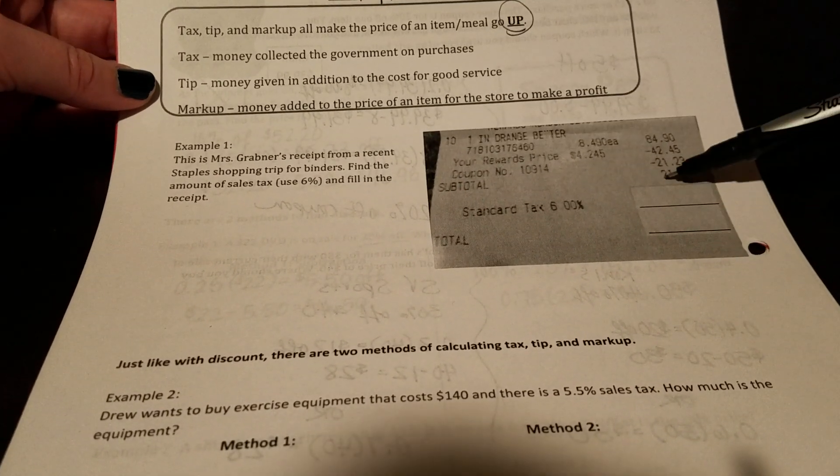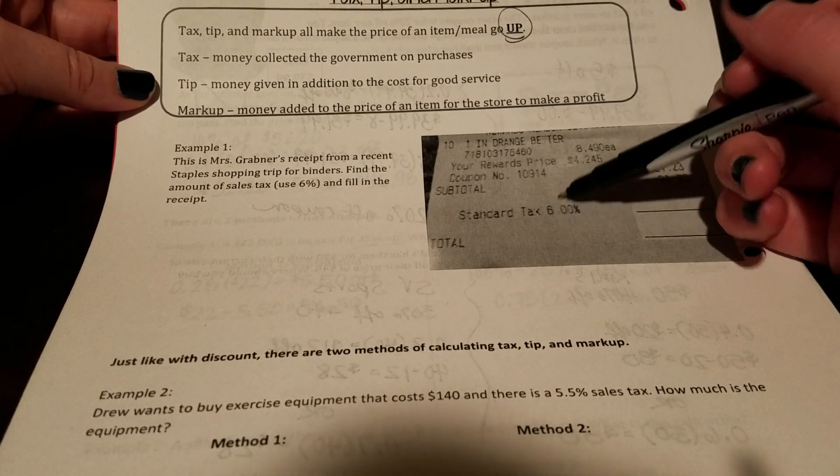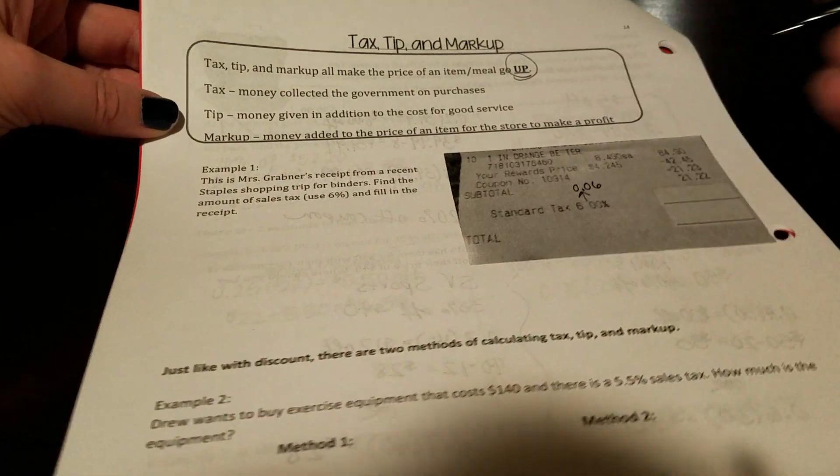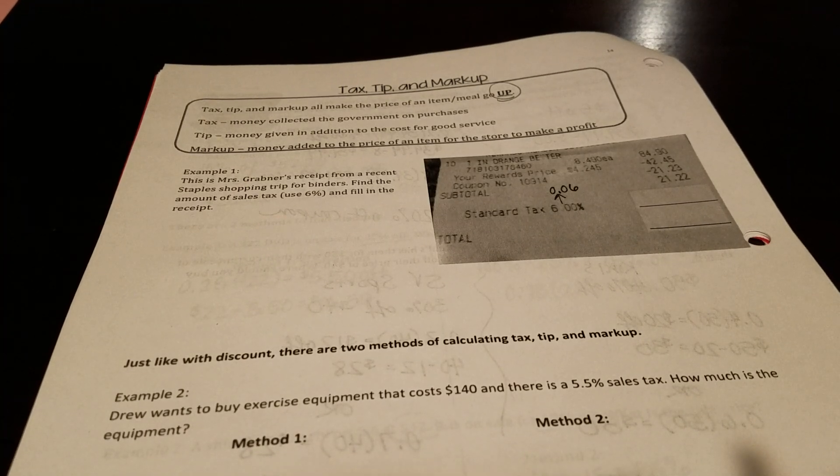So if we take my total subtotal of $21.22, our standard tax is 6%, which we are going to use is 0.06 because we're going to change it to a decimal. So if we do 0.06 times $21.22.